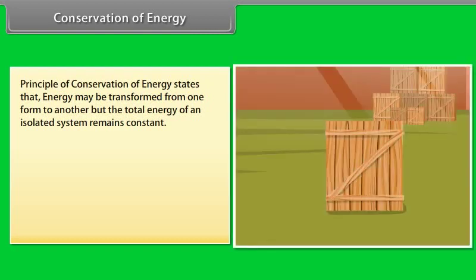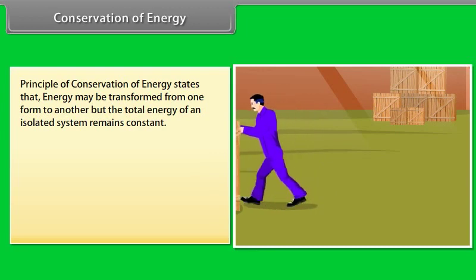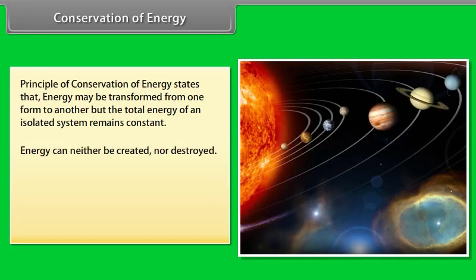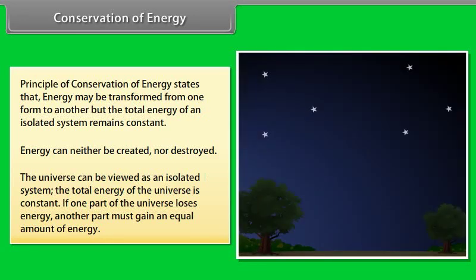Conservation of energy: Principle of conservation of energy states that energy may be transformed from one form to another, but the total energy of an isolated system remains constant. Energy can neither be created nor be destroyed. The universe can be viewed as an isolated system. The total energy of the universe is constant. If one part of the universe loses energy, another part must gain an equal amount of energy.